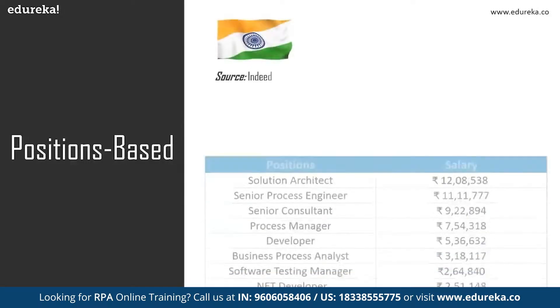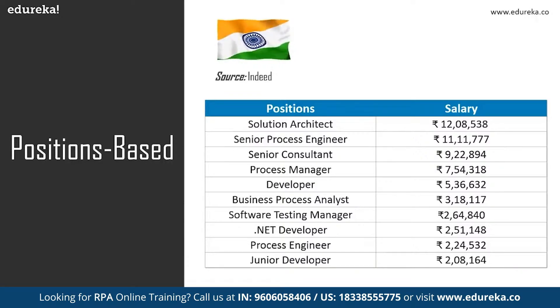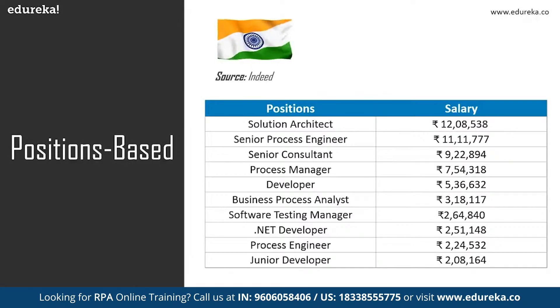Now let's look at the same positions in India, where the salary trend varies. In India, a solution architect earns around 12 lakh per year, a senior process engineer around 11 lakhs, a senior consultant around 9 lakhs, and a process manager around 7,05,4000 rupees. A developer starts at 5,36,000, a business process analyst earns around 3 lakhs, and the testing manager, .NET developer, process engineer, and junior developer all earn around 2 lakhs. Some roles popular in the United States are not as prominent in India, which is why I segregated salaries by positions and geographic locations.